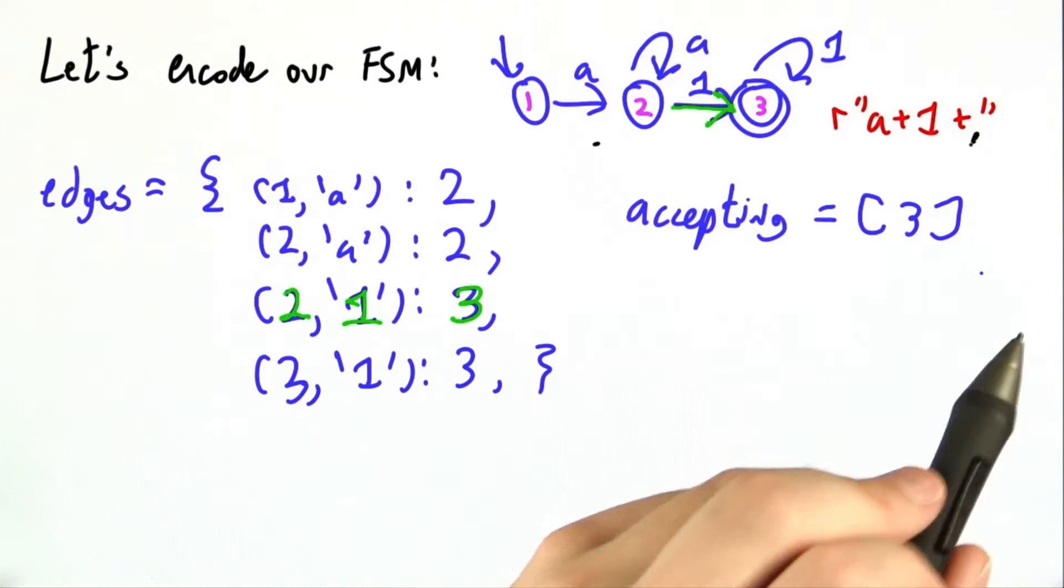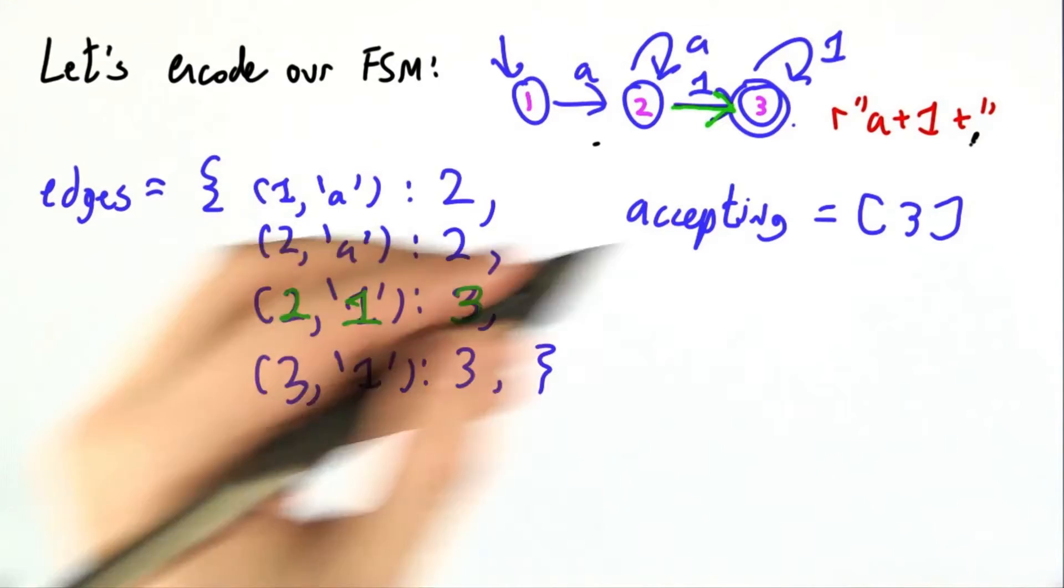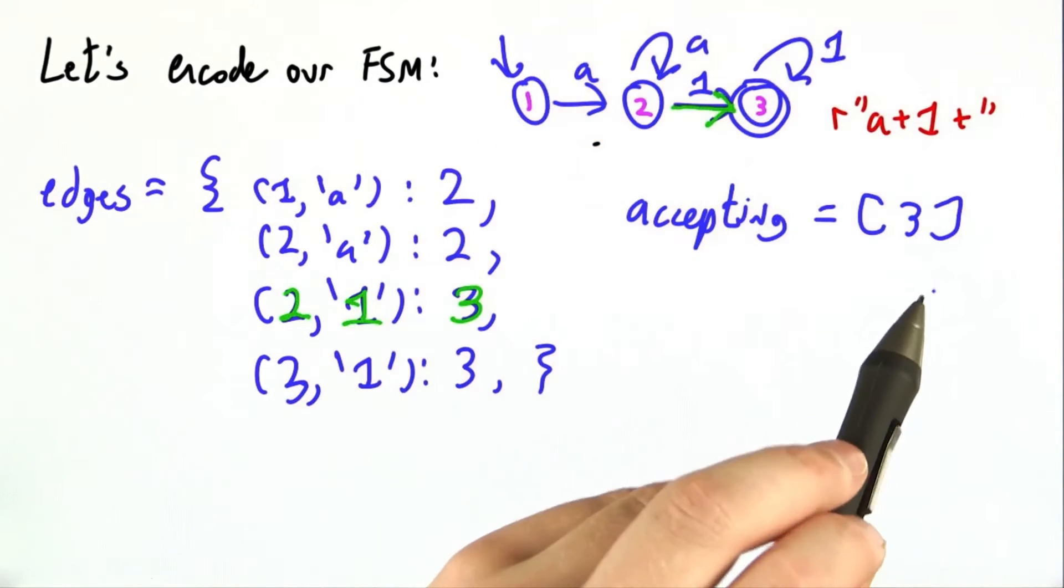I also need to know which states are the accepting states. Previously I denoted that by drawing double lines, but again we can't pass the picture into Python, so I'll just make a list of all the things that accept. And actually that's it.